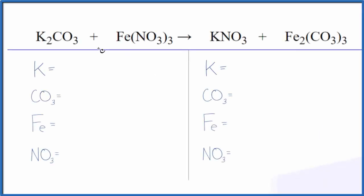For this equation, we have a double displacement reaction. The potassium and the iron are switching places. We also have a lot of polyatomic ions, so we're going to use a little trick to balance this equation and make it a lot easier. You can use this on any double displacement reaction.